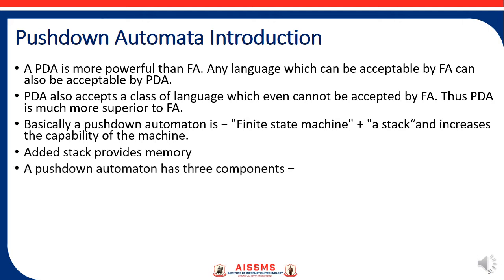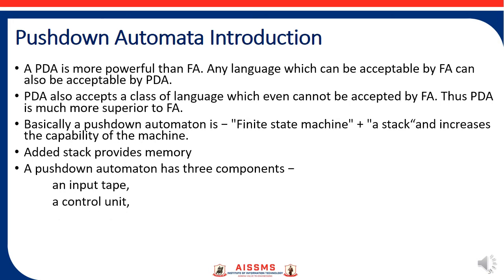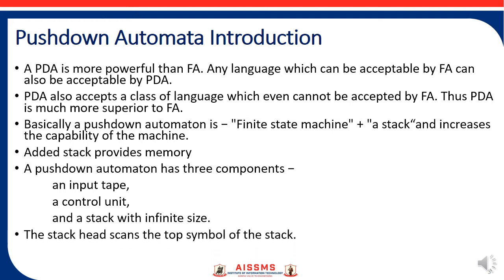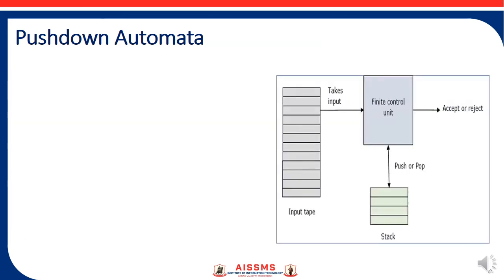A Pushdown Automata has three components. The first component is the input tape, the second is the control unit, and the third is the stack with infinite size. The stack has a stack head which scans the top symbol of the stack. This is how the components of the Pushdown Automata can be represented.